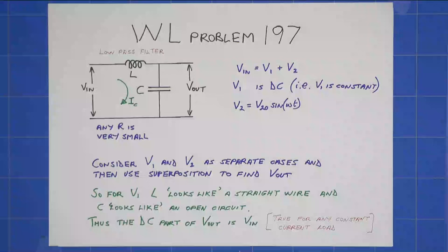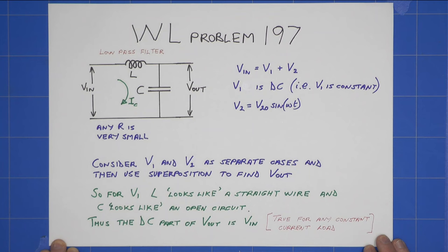So if you're ready, I'm ready. Here follows the video solution of Keith Norman. This is Keith's solution to Walter Lewin's problem 197. And it concerns an inductor and a capacitor acting as a low-pass filter.